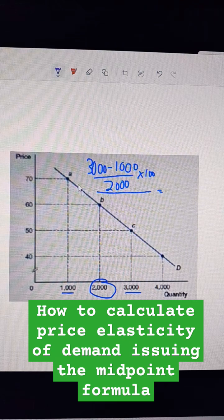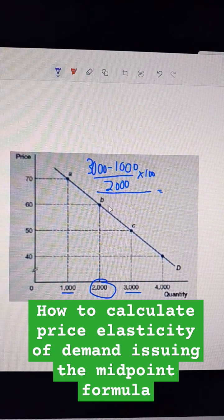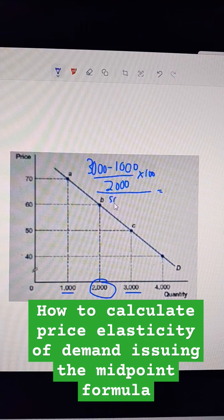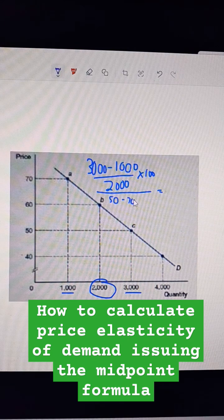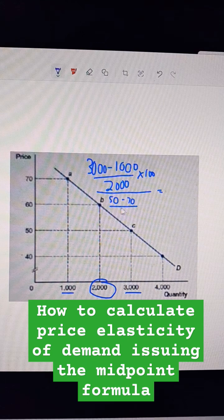Then on the price, I'm going from A to C. So I want to go 50 minus 70 over the midpoint, which is 60.